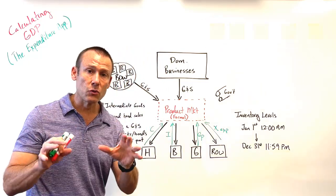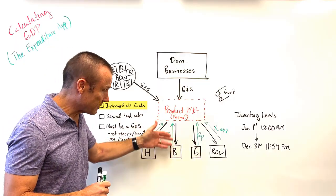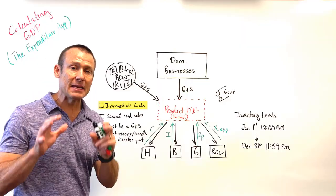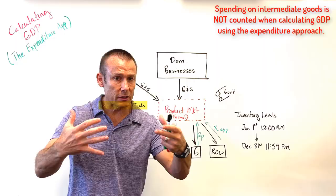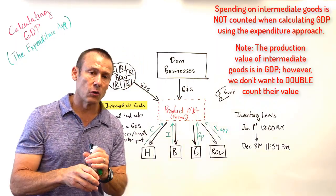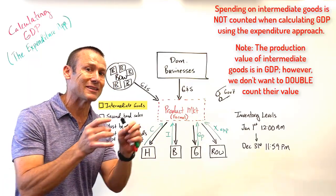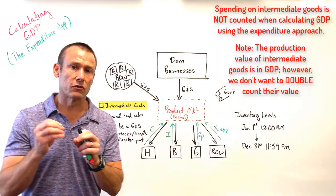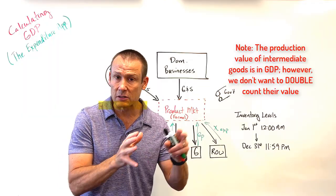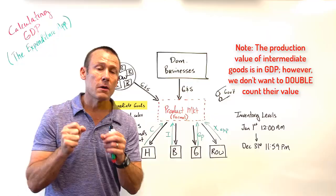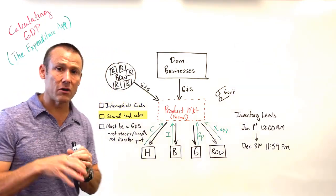There are a few important things to note. First, businesses buy some intermediate goods — and any purchase of an intermediate good we're not going to include in the expenditure approach. Intermediate goods are actually included in GDP, but we don't want to double count them. The value of the intermediate good is already embedded in the price of the final good, so counting both would double count that value. So we only count final goods and services.